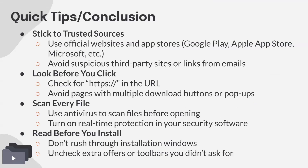Quick tips: always stick to trusted sources. Use official websites and the app stores already on your devices — that's the biggest thing. Always check the app store first for the program you're looking for. Sometimes programs aren't available there — for example, many Adobe programs aren't on the Apple App Store, so you have to go to their website. But for most things, your built-in app store should be the first place you look.